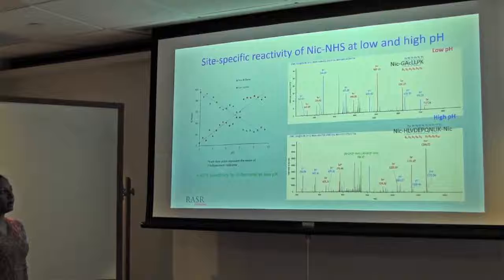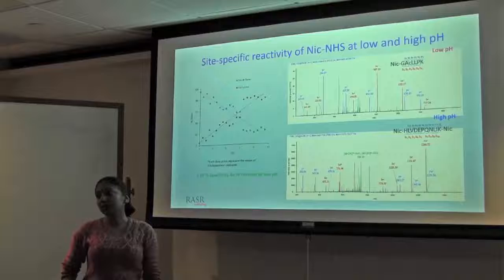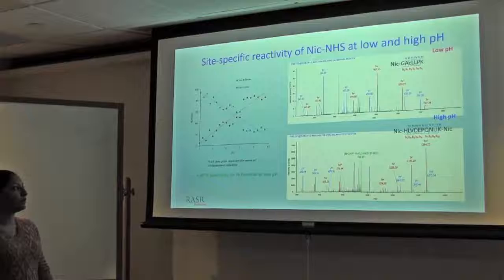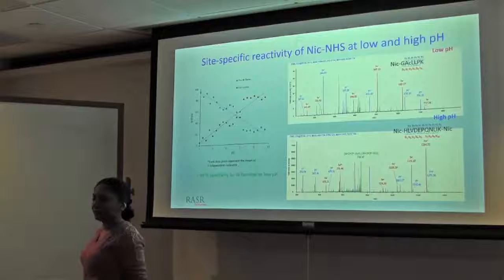These are the two MS-MS spectra which are showing that at low pH, our compound or the molecule is highly specific only to label N-terminal amines, and we get very good fragmentation, almost complete peptide. We have detected all ions. However, if we increase the pH and remaining all other conditions same, our compound is binding to both amines.